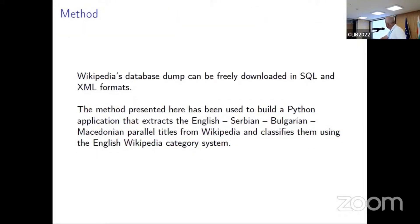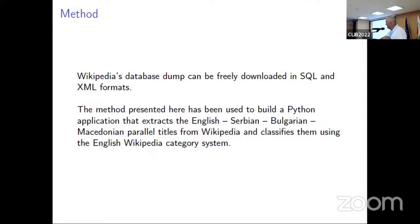Next, the method. The Wikipedia database dump can be freely downloaded in SQL and XML formats. For those not in informatics: SQL is a database script, a text file which can be opened by any text editor. We will have some examples of lexical entries in XML format later on.